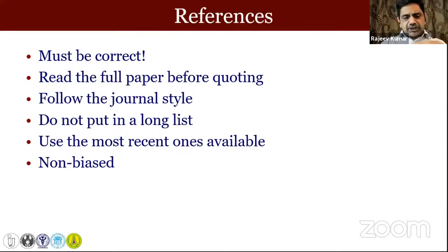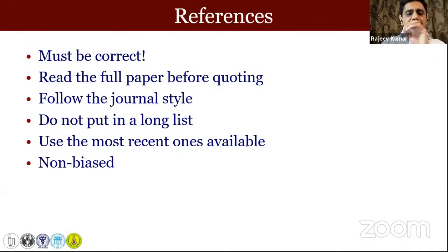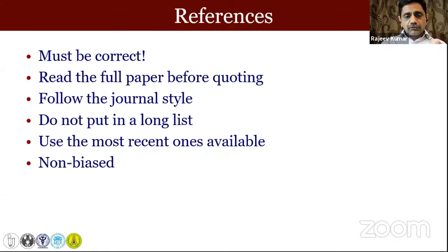Next aspect is references — this is where everybody tries to take a shortcut and that bugs the editor and reviewer. The references must be correct. A practical piece of advice: search for the reference on PubMed, use the PubMed citation tool, copy that citation from PubMed and put it in your paper — that way you ensure your reference is complete. Today automated software looks at your references, and if a software says that 10 of your 12 references can't be found, the editor is going to throw you out. If you're quoting a paper, don't quote it from just an abstract or conclusion. Try to use the most recent references — don't go back 20 years just because it favors what you're saying.